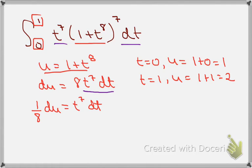So now I know that my integral, once I make my substitutions and change my limits, is going to look like the integral from 1 to 2. I have a one-eighth which comes from my du, and then u—which is 1 plus t to the eighth—raised to the seventh power, so that's u to the seventh power du.